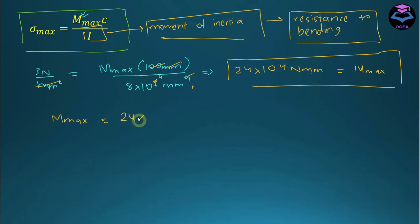24×10⁴ N·mm × (1 m / 1000 mm). Millimeter cancels out with three zeros, giving us 240 N·m. So M_max = 240 N·m.